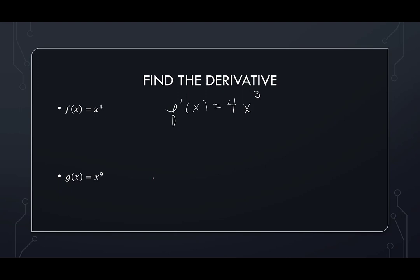Same thing, I have g of x is x to the ninth. g prime of x, I bring the 9 down, I subtract 1 from the exponent. Now I have 8.